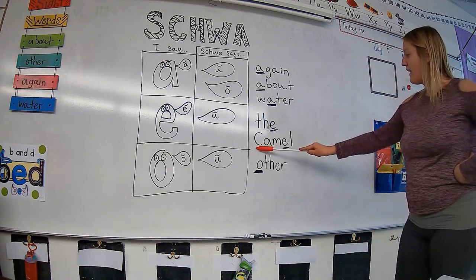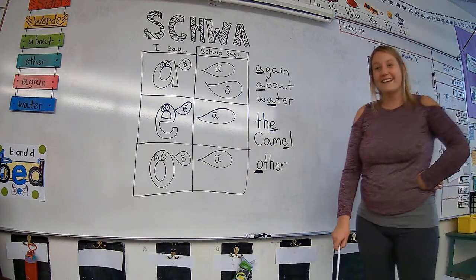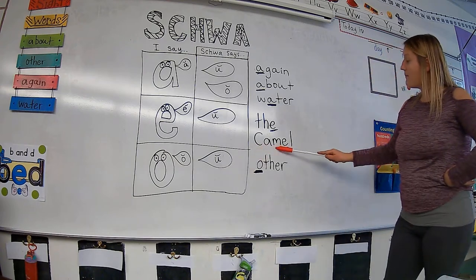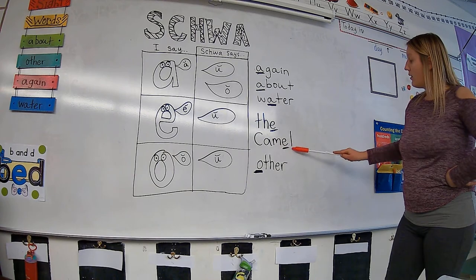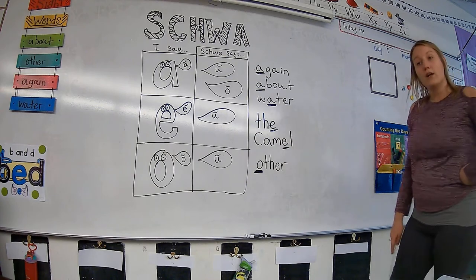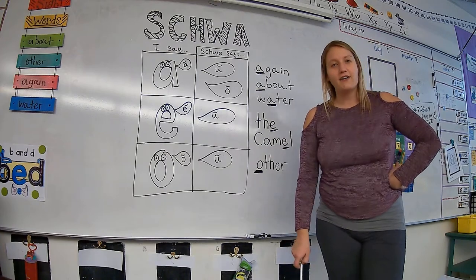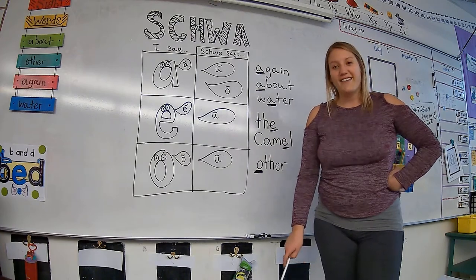Now here I have the word camel, like the animal, camel. We have k-a-m-uh-l. Camel. Notice how the E stole that schwa sound and it said uh for camel.